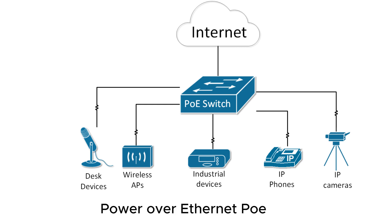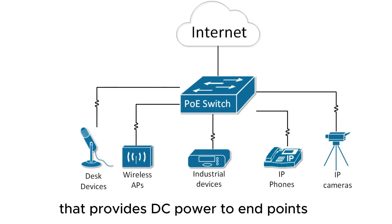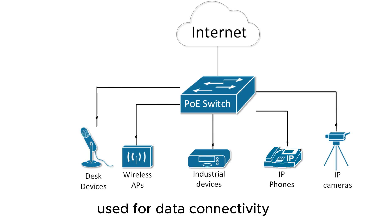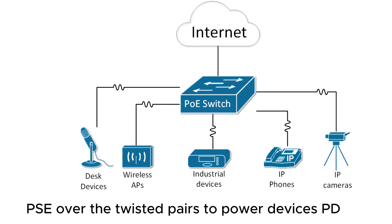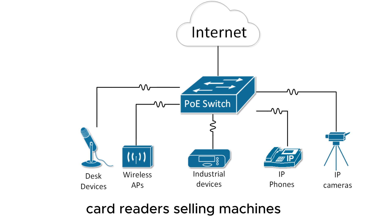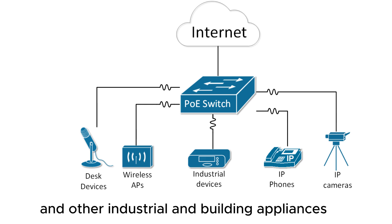Power over Ethernet (PoE) is a widely used LAN technology that provides DC power to endpoints over existing copper Ethernet cabling used for data connectivity. Power is passed from power sourcing equipment (PSE) over the twisted pairs to powered devices (PD), such as IP phones, IP cameras, card readers, vending machines, wireless access points, and other industrial and building appliances.